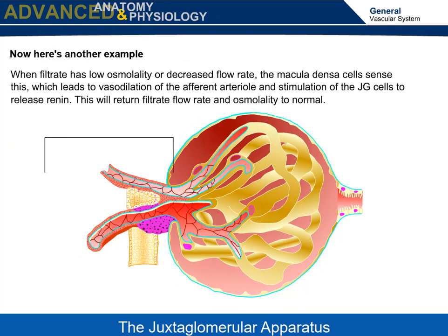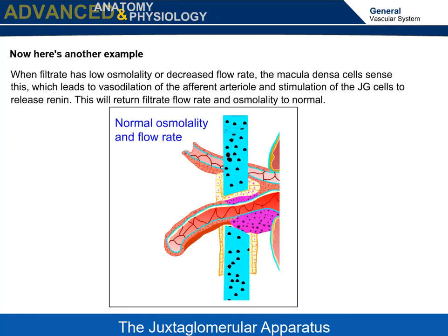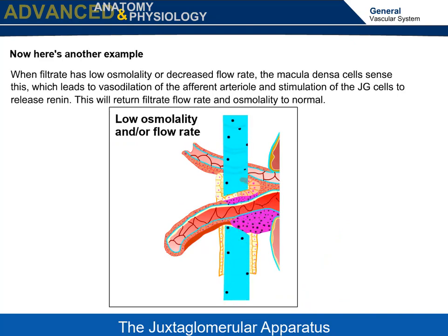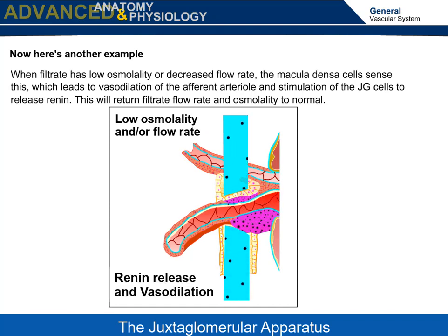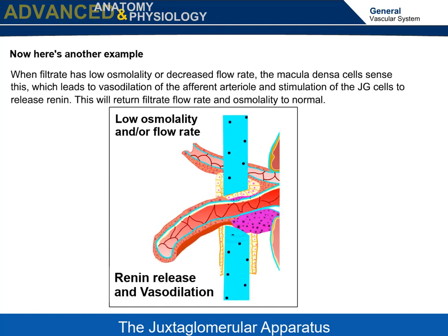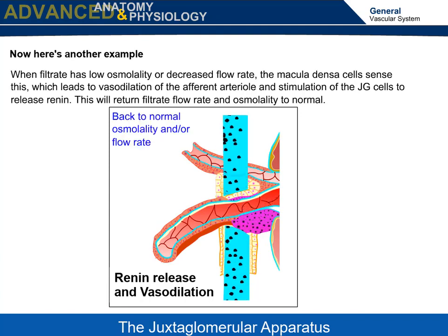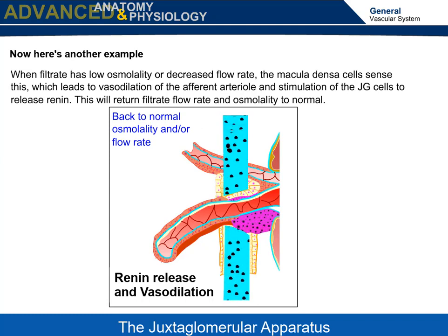Here's another example: when filtrate has low osmolality or decreased flow rate, the macula densa cells sense this, which leads to vasodilation of the afferent arteriole and stimulation of the JG cells to release renin. This will return filtrate flow rate and osmolality to normal.